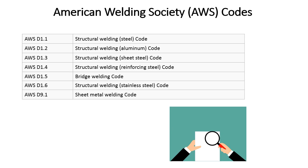A lot of people have the misconception that D1.1 is a catch-all. Early in my career, I had a design engineer wanting hydraulic cylinders designed to AWS D1.1, and I could not explain to him that this was not the correct code. Eventually the compromise was that the hydraulic cylinders would meet all the applicable portions of D1.1 and everybody was happy. But you need to realize there are different welding codes for different applications.